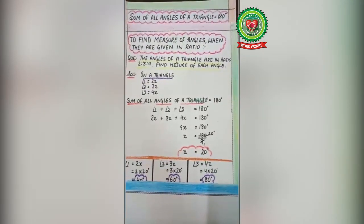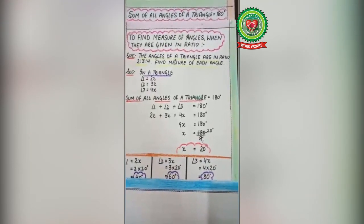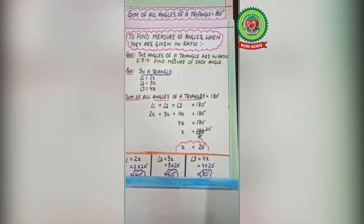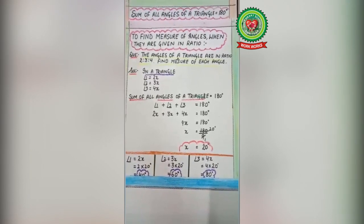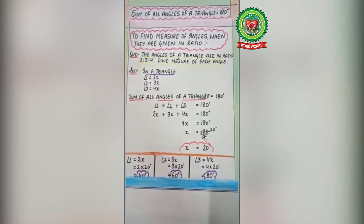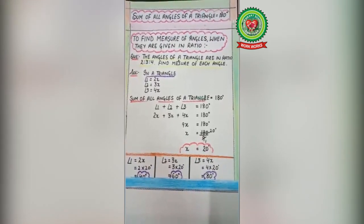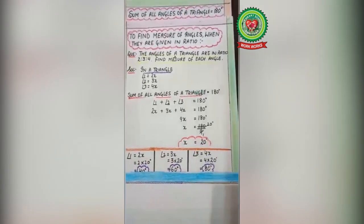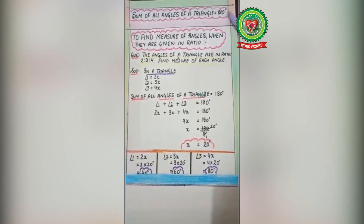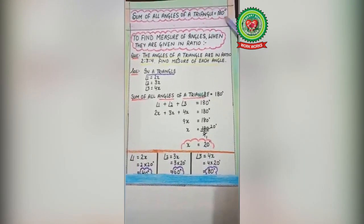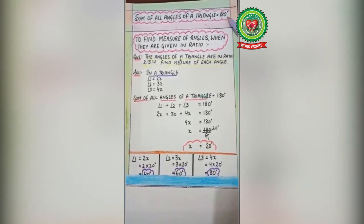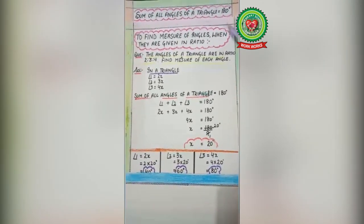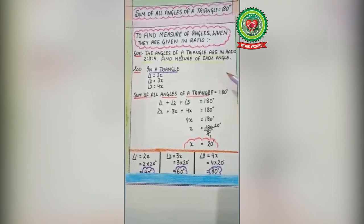Before starting this question, we will recall the property we have done in junior classes — this is the angle sum property of a triangle. The angle sum property states that the sum of all angles of a triangle is equal to 180 degrees. The sum of all angles of a triangle always adds up to 180 degrees.